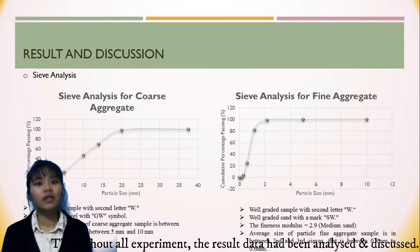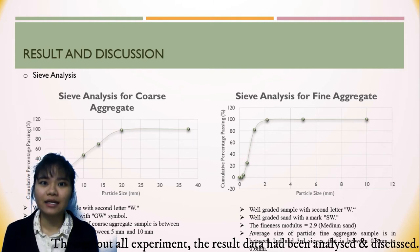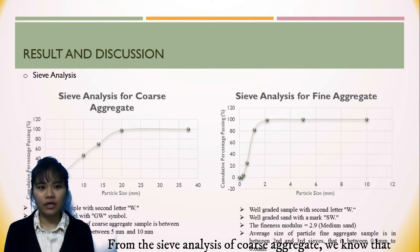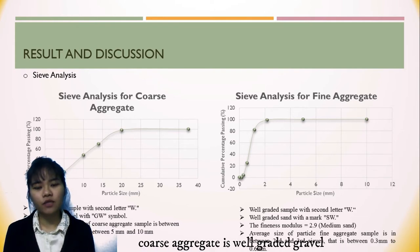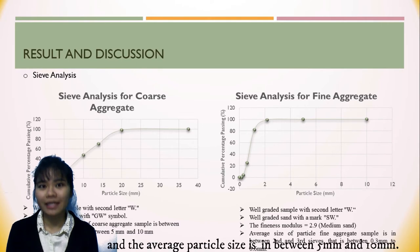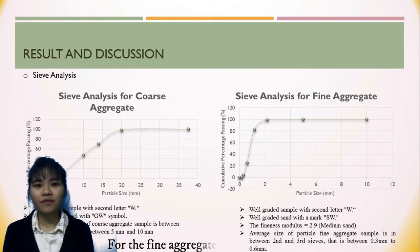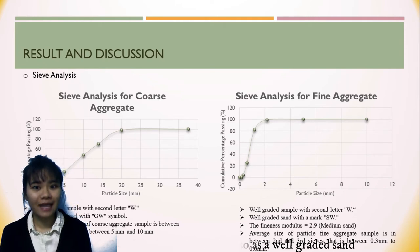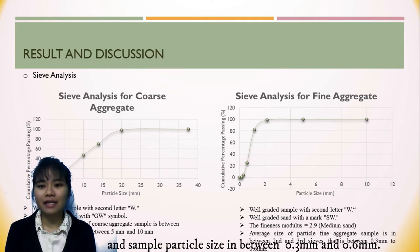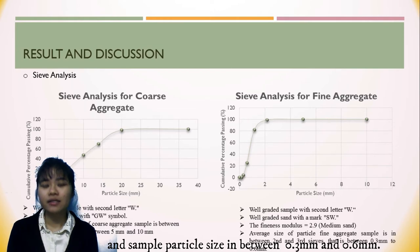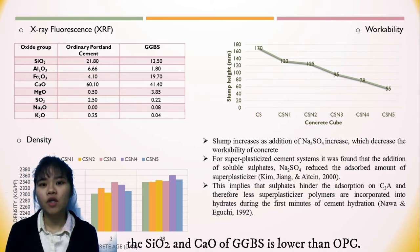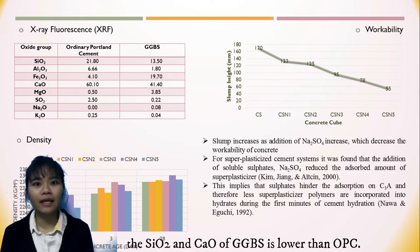The result data has been analyzed and discussed. From the sieve analysis of coarse aggregate, the coarse aggregate is a well-graded gravel with an average particle size of 5 to 10 mm. For the fine aggregate, it is also well-graded sand with sample particle size between 0.3 mm and 0.6 mm. For the XRF results, the silicon dioxide and calcium oxide content of GGBS is lower than OPC.